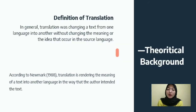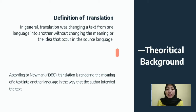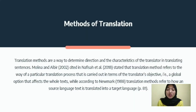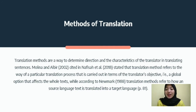Moving to the theoretical background, the definition of translation. In general, translation means changing a text from one language into another without changing the meaning or idea from the source language. According to Newmark, translation is rendering the meaning of a text into another language in the way that the author intended. Translation methods are a way to determine direction and characteristics of the translator. According to Newmark in 1988, translation methods refer to how a source language text is translated into a target language.